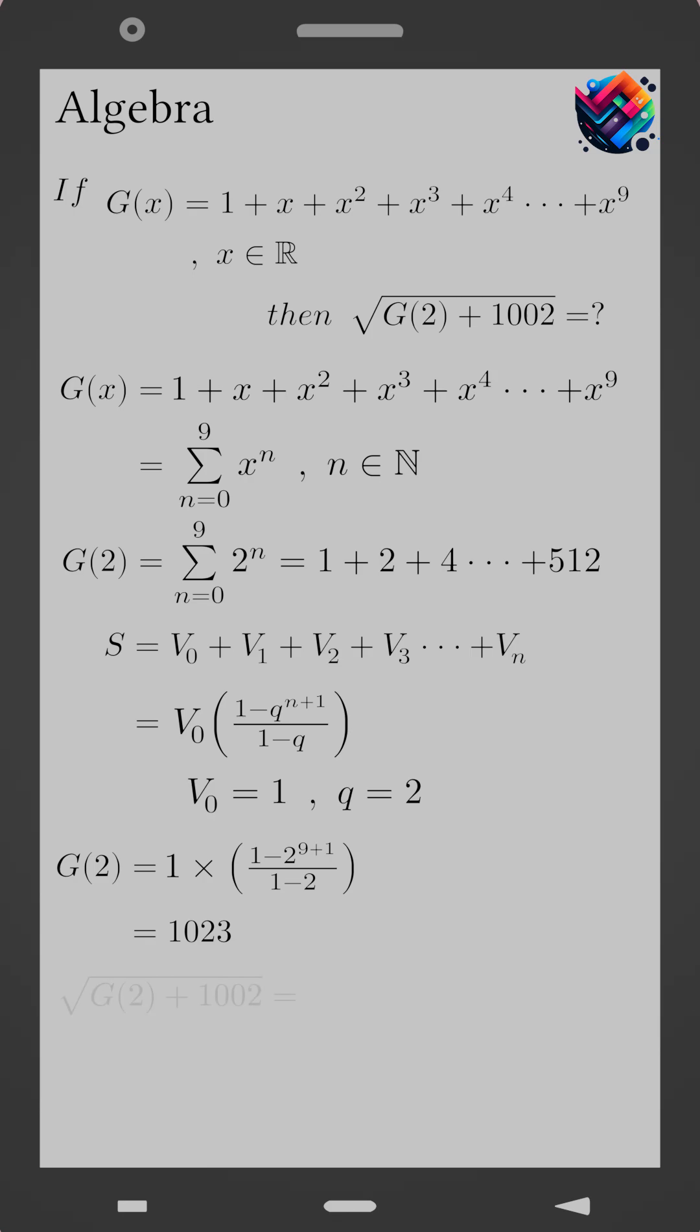Now compute the required expression. G of 2 plus 1002 equals 1023 plus 1002, which gives 2025.